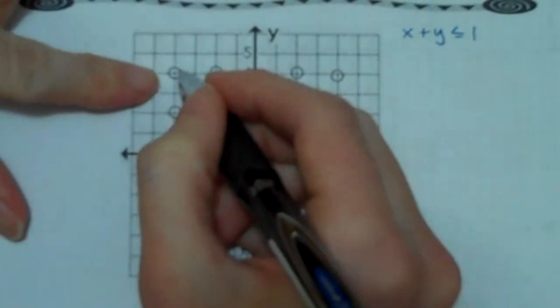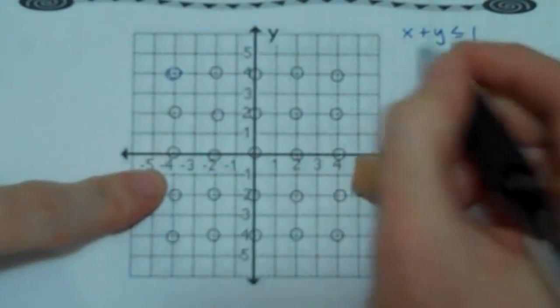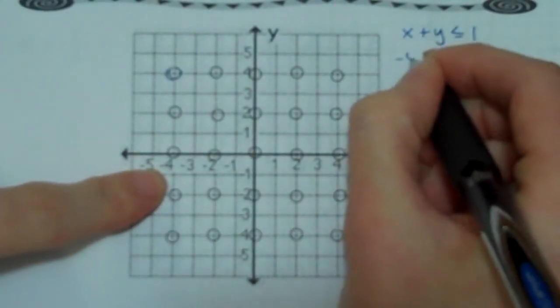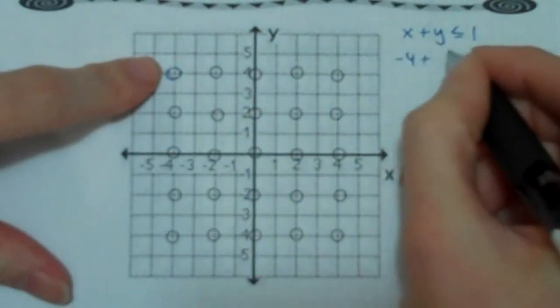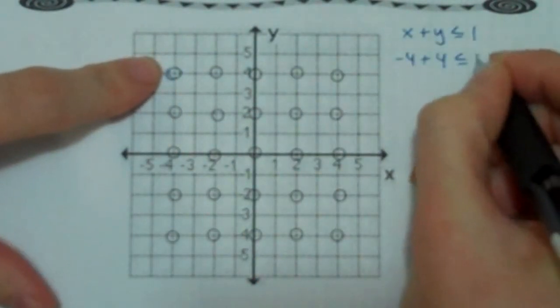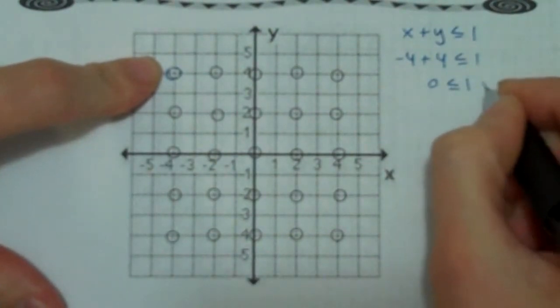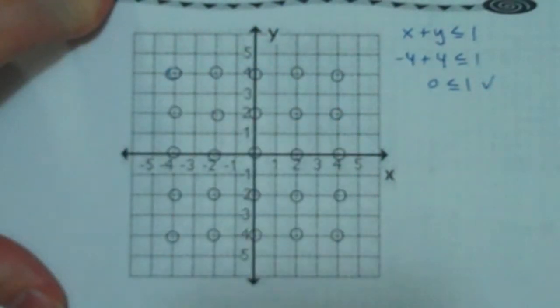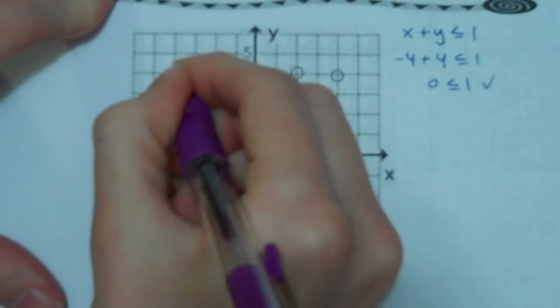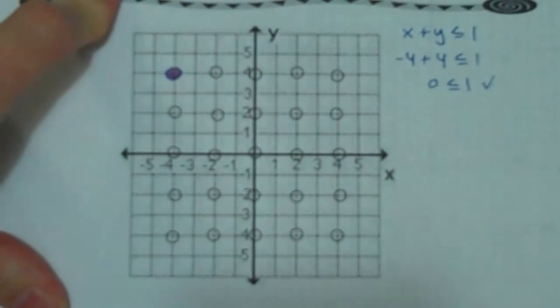Let's start with this circle right here. This circle is negative 4 is the x value, so it's negative 4 plus, and then my y is positive 4. It's less than or equal to 1. Negative 4 plus 4 is 0. It's less than or equal to 1. So that is a solution. So because it's a solution, I'm going to color it purple. There's my nice purple dot to remind me that that was a solution.